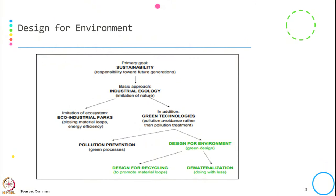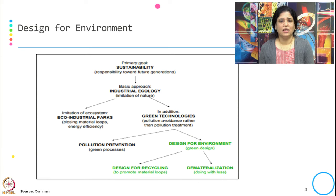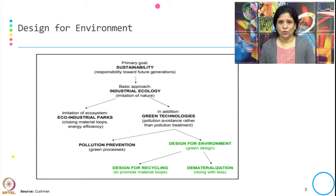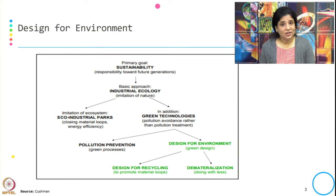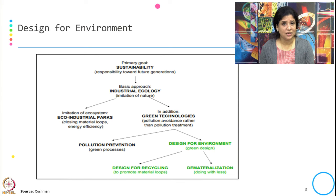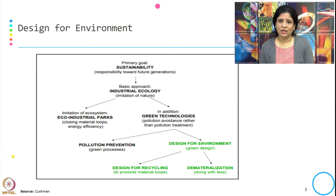Going further, let us see where the Design for Environment fits into our goal of sustainability or the journey of sustainability. What is the primary goal? The primary goal is sustainability, that is responsibility towards the future generation. What is the basic approach being followed? That is industrial ecology — we try to imitate or mimic nature to conserve and reuse resources.